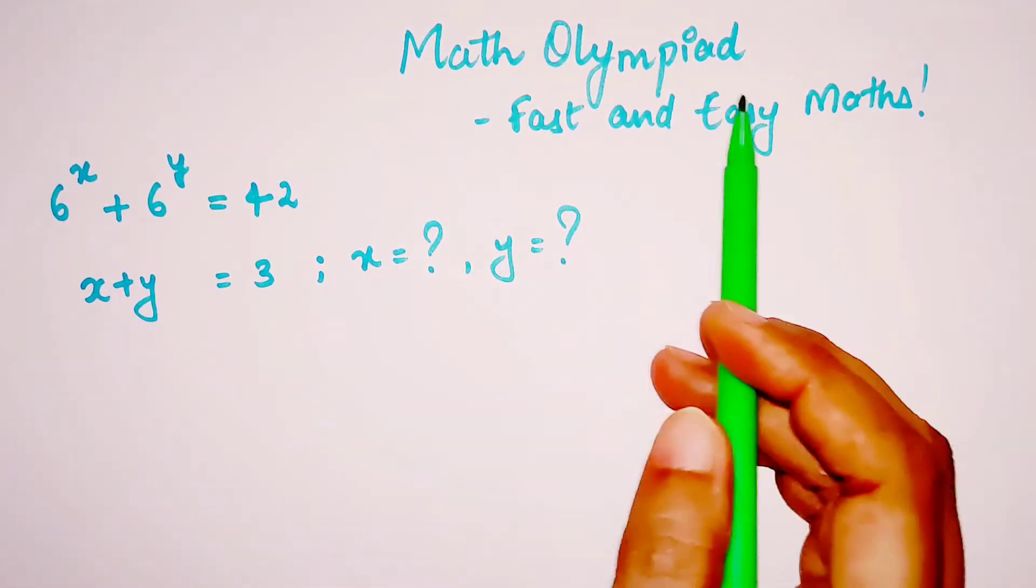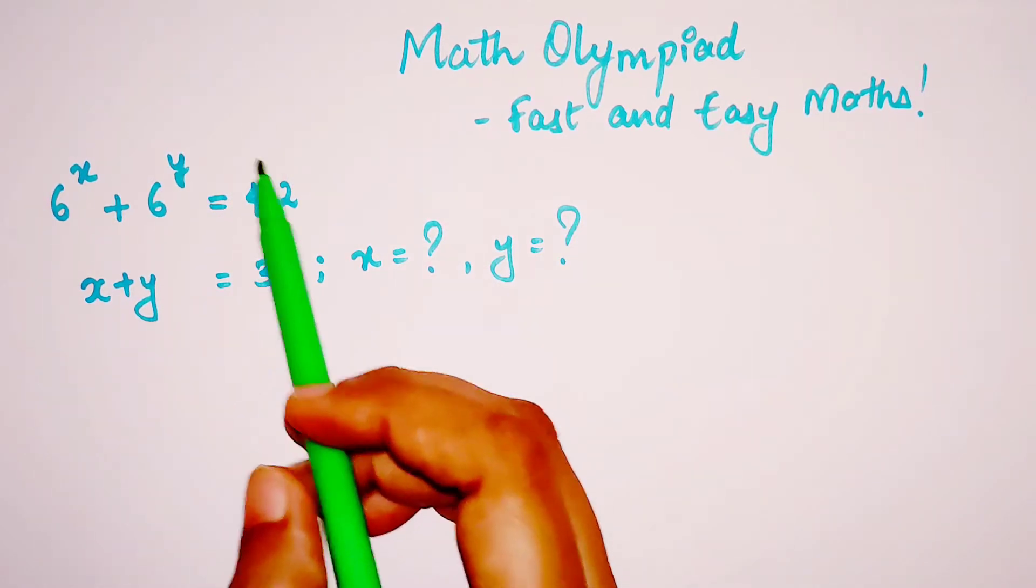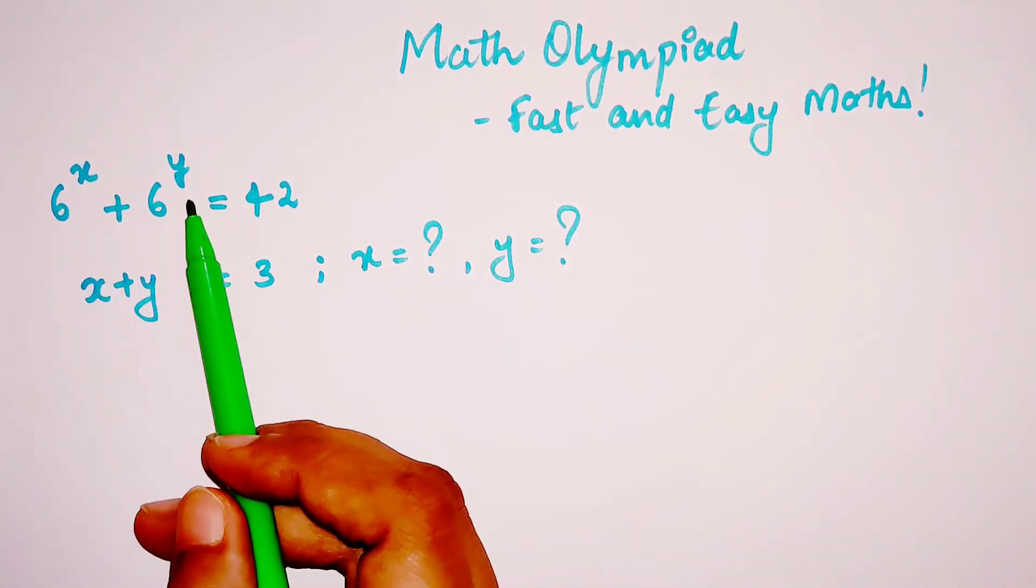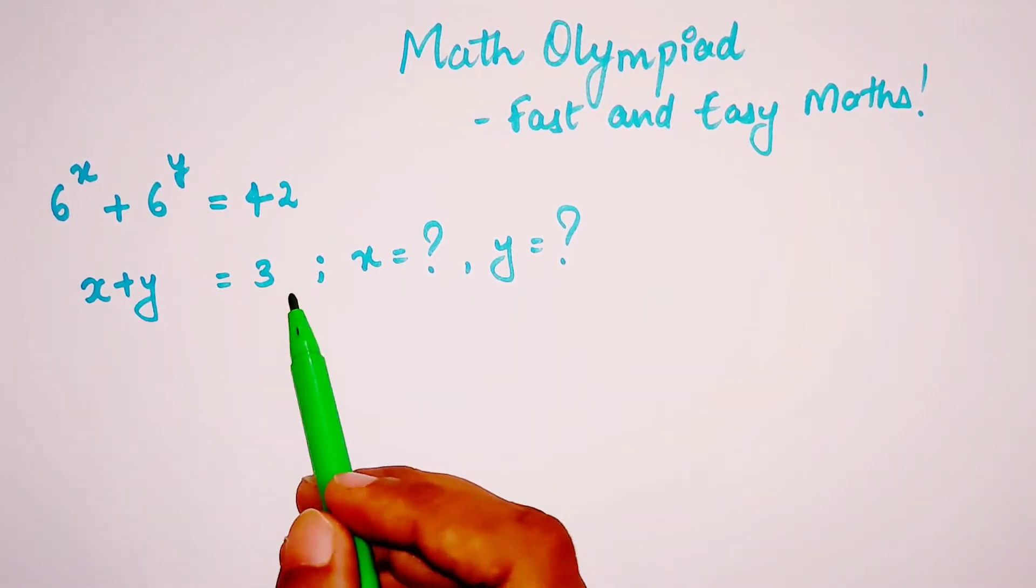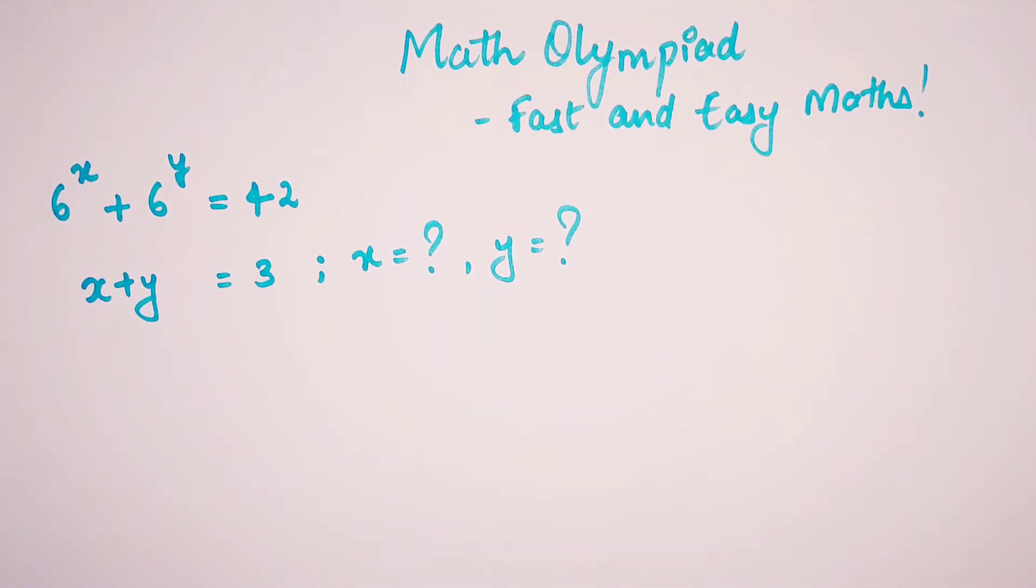Today we're going to solve a Math Olympiad question. The question is: if 6^x + 6^y = 42 and x + y = 3, then we have to find the value of x and y.